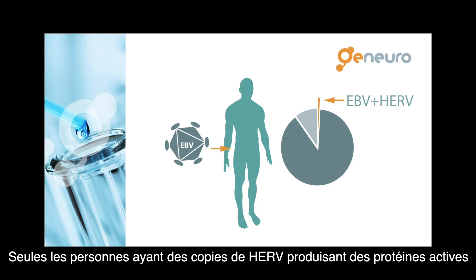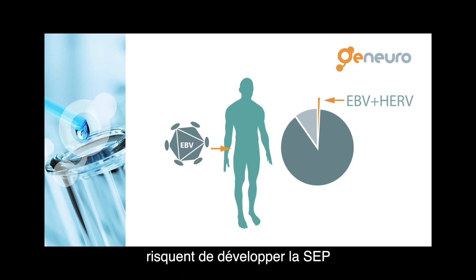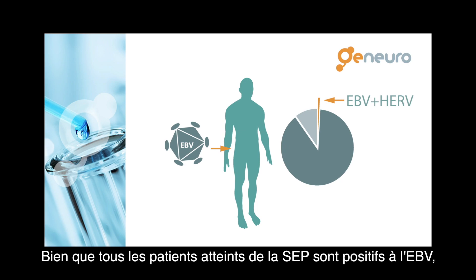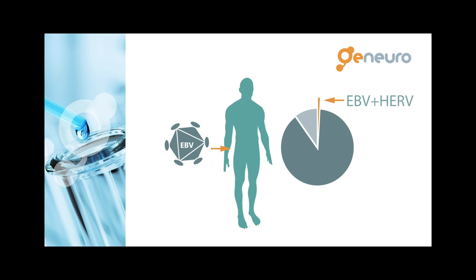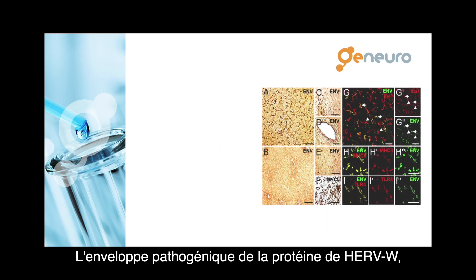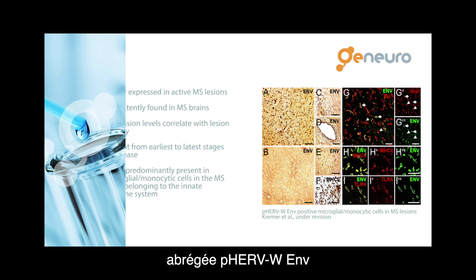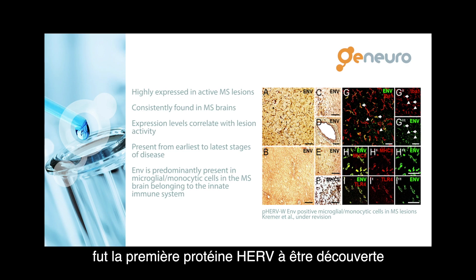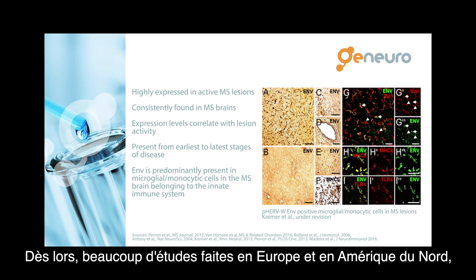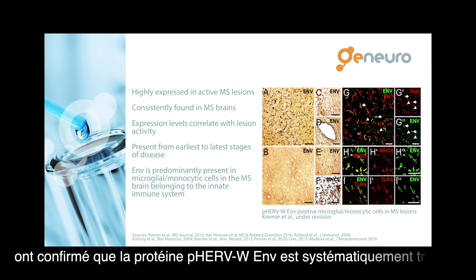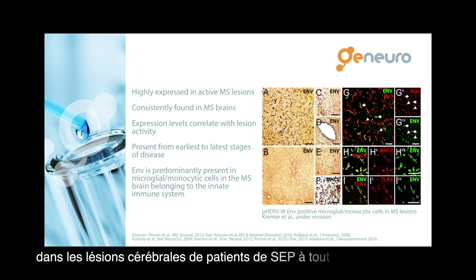Only people with HERV copies encoding for active proteins may develop MS. While all MS patients are positive for EBV, they also have HERV-W proteins in their brain. The pathogenic envelope protein of the HERV-W family, abbreviated P-HERV-W-OV, was the first HERV protein discovered back in the early 90s. It was isolated in post-mortem biopsies from multiple sclerosis patients. Since then, many studies in Europe and North America have confirmed that this protein is consistently found in the brain lesions of MS patients, from the earliest to the latest stages of the disease.